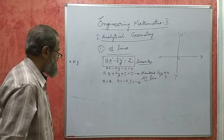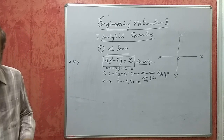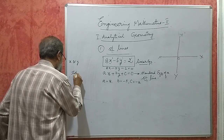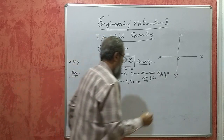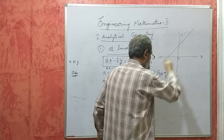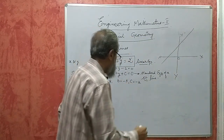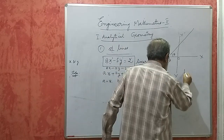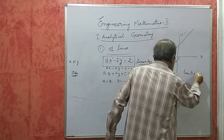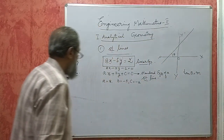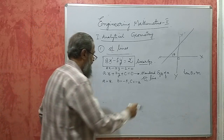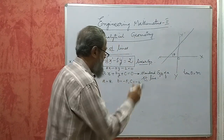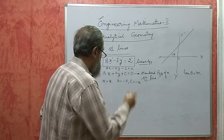Given a straight line, they can ask us to find its slope. What do we mean by slope? Suppose I have a straight line drawn on a graph sheet. This line is inclined to the x-axis at some angle theta. The tan of that angle theta is called its slope, usually denoted by m. So m stands for the slope of a straight line, and tan theta gives the slope.